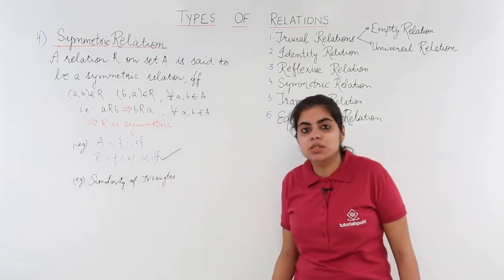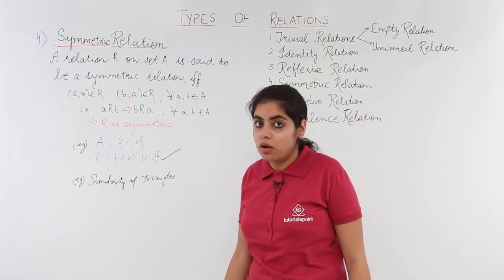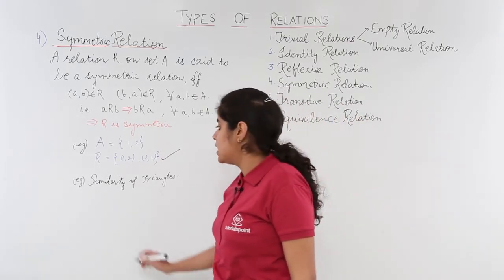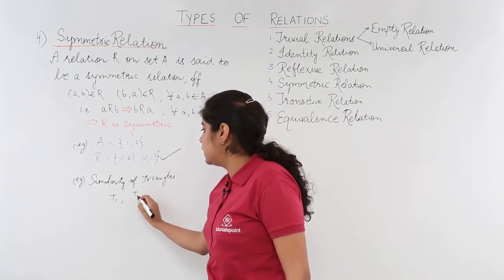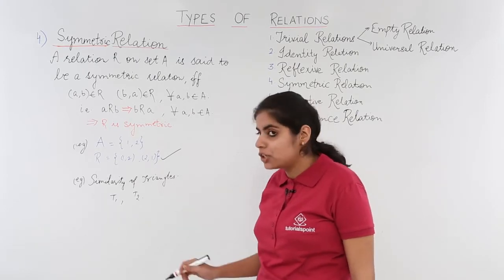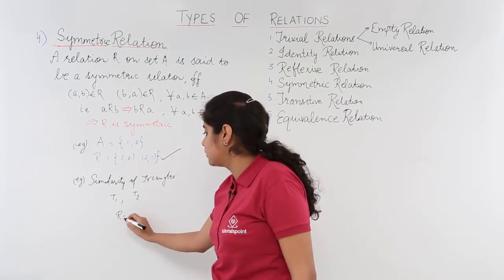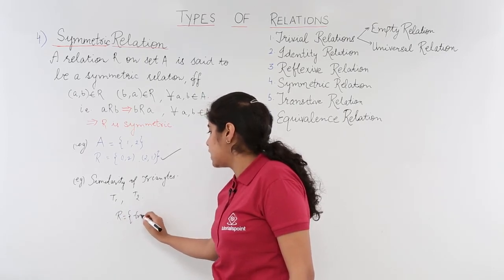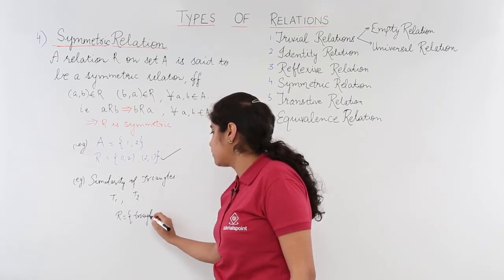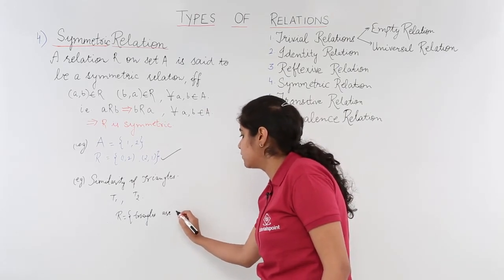Similarity of triangles is one such example where symmetric relation would work. How and why? Let's see. Suppose I have been given two triangles T1 and T2 and the relationship is what? Relationship on these triangles is nothing but triangles are similar.